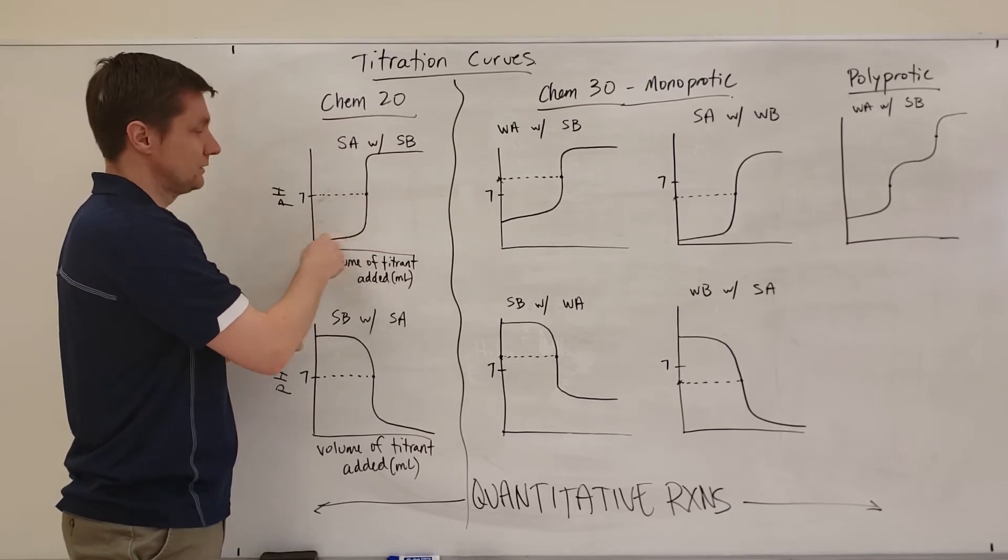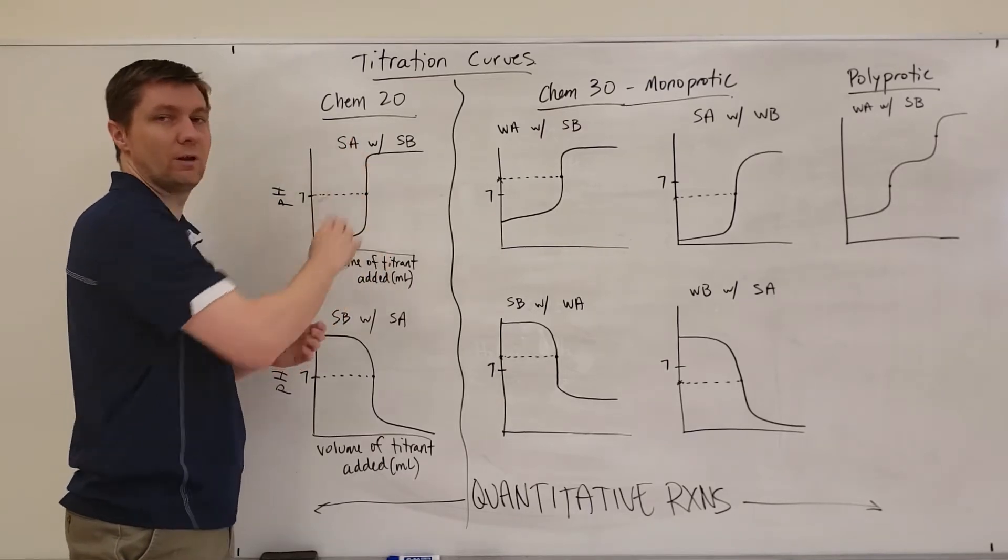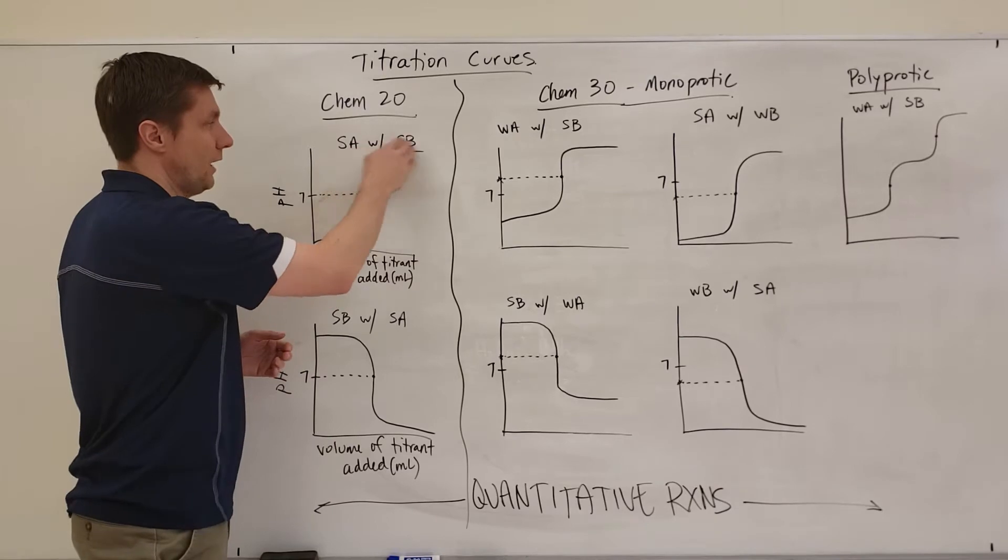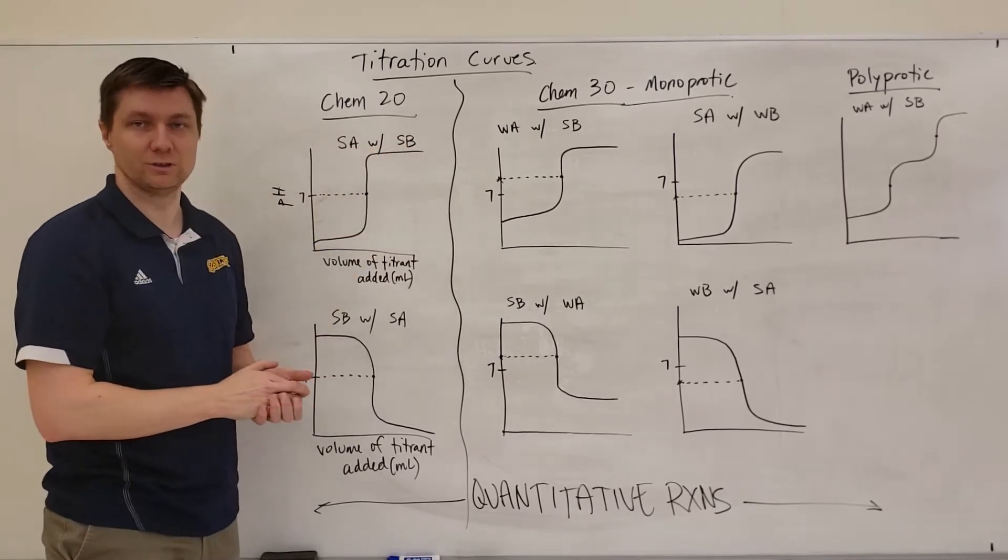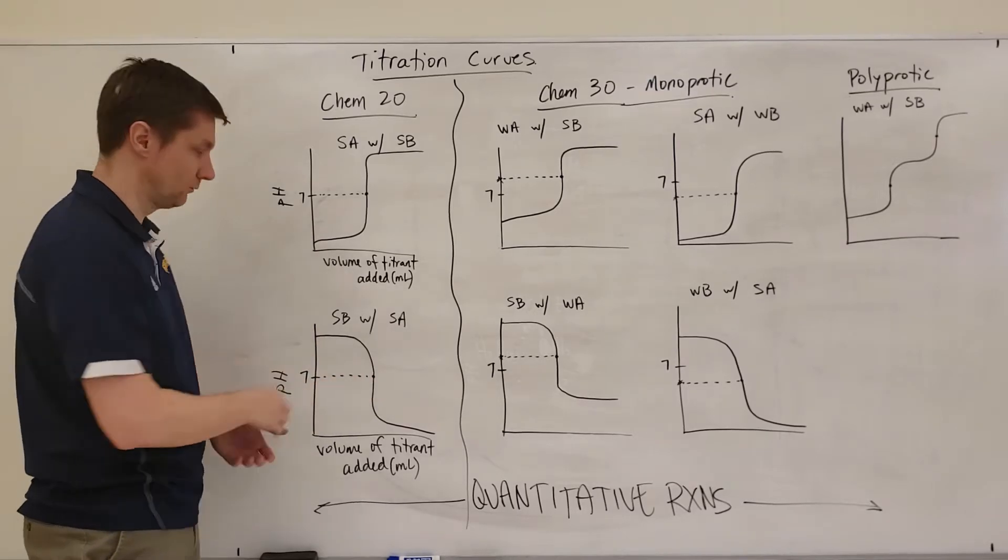then I'm going to get these flat regions where the pH doesn't really change very much. And then with a very small volume, I'm going to get a real big spike in pH. And then I'm going to be up here in the base region of the pH scale. And then if we were to flip the sample in titration, we'd have that.